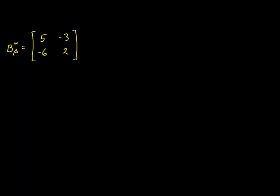Suppose we have a curvature tensor that looks like this. We learned in the last video that we can find the mean curvature by forming the contraction — B alpha alpha — which implies the summation of the elements along the diagonal. So B alpha alpha would be 5 plus 2 is 7. That's the mean curvature. We also learned that the Gaussian curvature will be equal to the determinant of this matrix. The determinant, with one upper index and one lower index, is the product of these two elements minus the product of these two. So 10 minus 18 is negative 8. The mean curvature is 7 and the Gaussian curvature is negative 8.